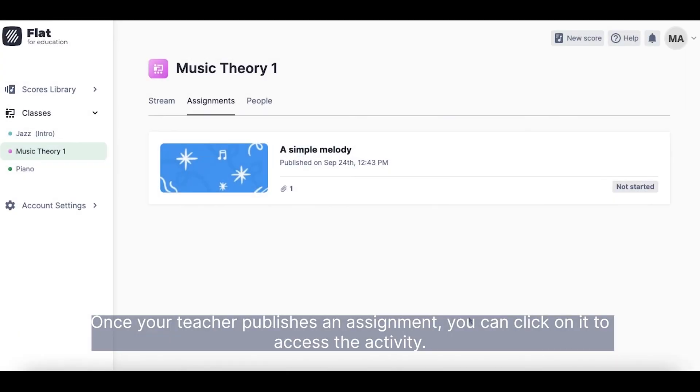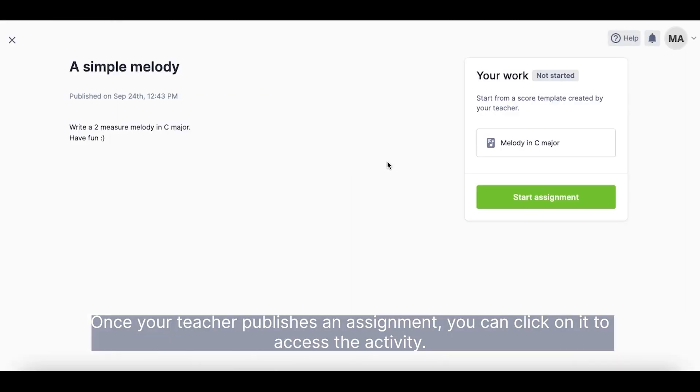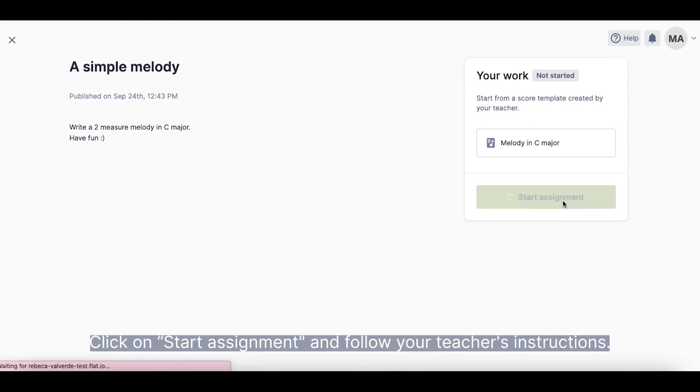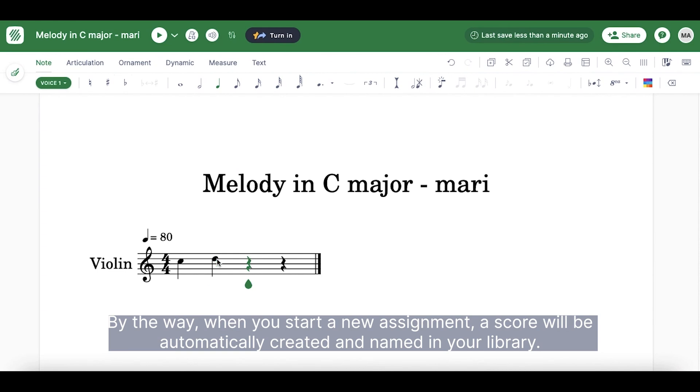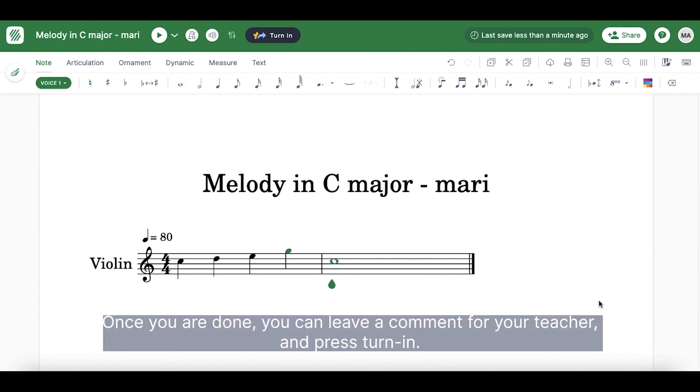Once your teacher publishes an assignment, you can click on it to access the activity. Click on Start Assignment and follow your teacher's instructions. By the way, when you start a new assignment, a score will be automatically created and named in your library. Once you are done, press Turn In.